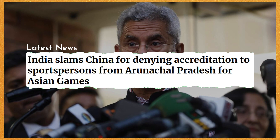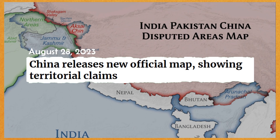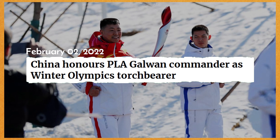Ab is event ke baare mein aur baat karein toh, last month mein hi China ne apne standard map ko publish kiya tha — humne us event ko cover bhi kiya tha. Us standard map mein China ne North East se poore Arunachal Pradesh ko, aur Jammu aur Kashmir se Aksai Chin ko apni territory ka part show kiya tha. China ki ek history hai sports events ko politicize karne ki. China ne pichhle saal hue Winter Olympics mein bhi Galwan mein India aur China ke beech hue clash ke us samay ke military commander ko apne games mein torch bearer ke roop mein appoint kiya tha. India ne us samay par bhi Winter Olympics ko diplomatically boycott kar diya tha.